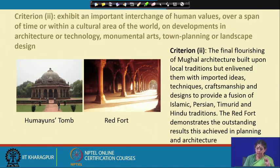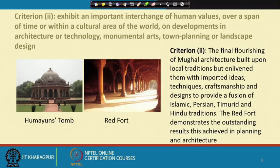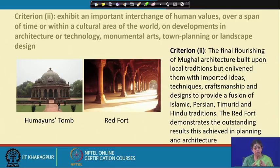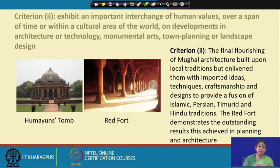How is it justified? For criteria two, in the case of the Red Fort, it says: the final flourishing of Mughal architecture built upon local traditions but enlivened with imported ideas, techniques, craftsmanship, and designs to provide a fusion of Islamic, Persian, Timurid, and Hindu traditions. That is why it is called the interchange of human values. The Red Fort demonstrates the outstanding results achieved in planning and architecture, and this is why it is inscribed mainly under criteria two.